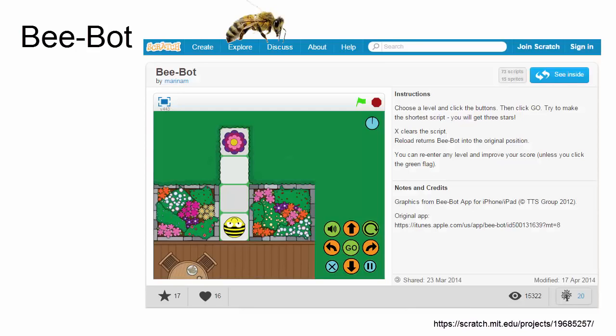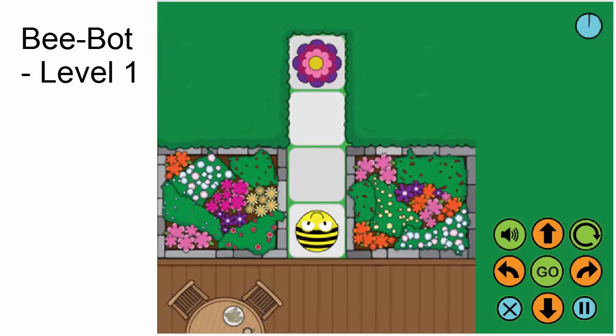Bebot is a simple game for very young children to start to understand programming. Although geared toward children younger than middle and high school, Bebot can be used as a visual example to explain and practice decomposition. The goal in the Bebot game is to move the bee from its starting point to the flower by inputting instructions using the arrow keys.